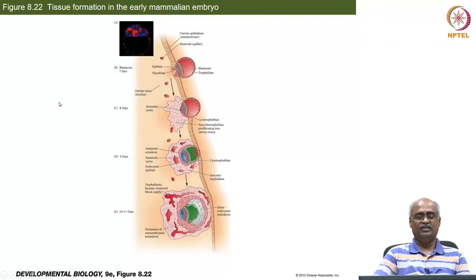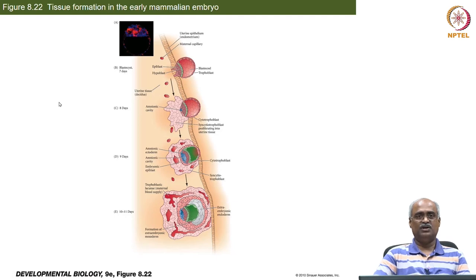This completes our description of early embryonic development up to gastrulation. Tomorrow we will continue mammalian embryonic development starting from gastrulation.